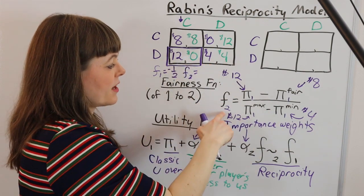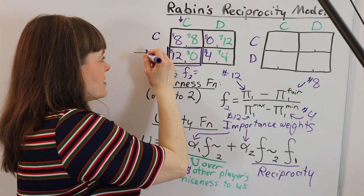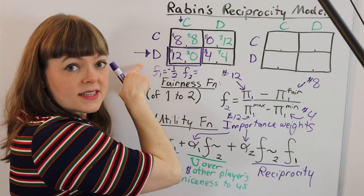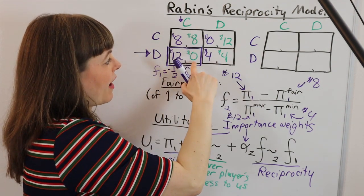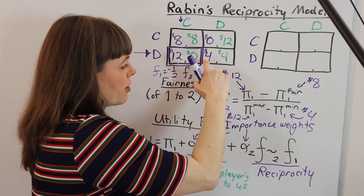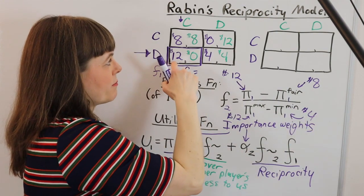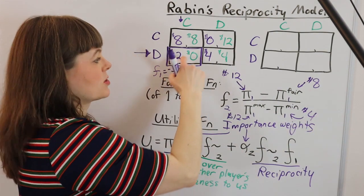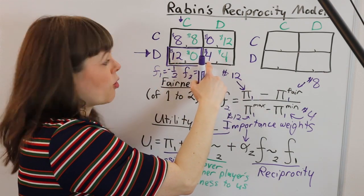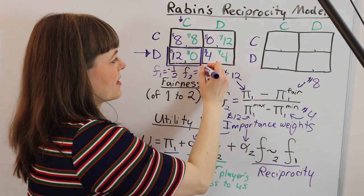So in this box if we're looking for player two's fairness toward player one we are going to hold constant player one's behavior. So we're saying player one chose to defect, in which case player two could have either given player one 12 or given player one 4. So that's our max 12 and our min 4. And what they actually got, what player two actually gave player one, is 12. That's up here. And a fair amount would have been halfway between 12 and 4, and that's going to be 8. If you plug the numbers in you get positive one half.